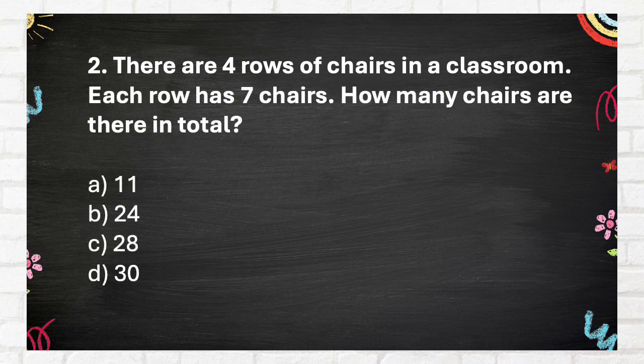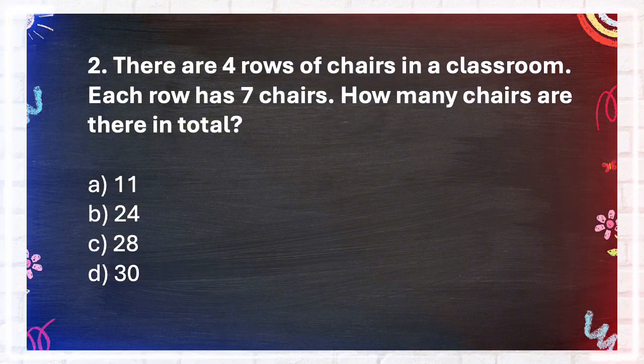Question number 2. There are 4 rows of chairs in a classroom. Each row has 7 chairs. How many chairs are there in total? Again, there are 4 rows of chairs in a classroom. Each row has 7 chairs. How many chairs are there in total? A. 11. B. 24. C. 28. D. 30.